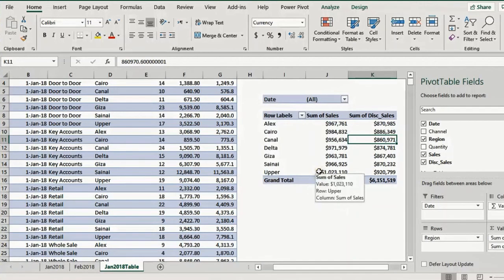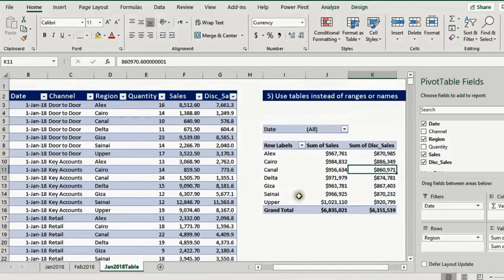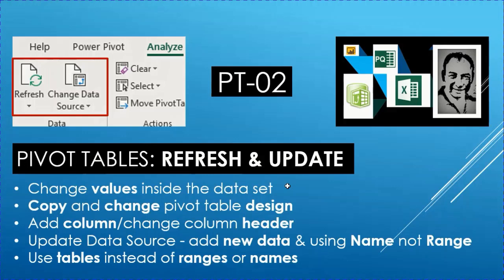We did all the actions from the previous four steps, but it is much easier using tables. Working with pivot tables is easy to analyze your data, but with tables it is much much easier. We discussed how to change values inside the data set, how to copy and change the pivot table design, what happens when we add new columns or change column headers, how to add new data using named ranges, and finally how this works with tables instead of ranges or names. Thank you very much for your time — please stay tuned for the next video PT03.